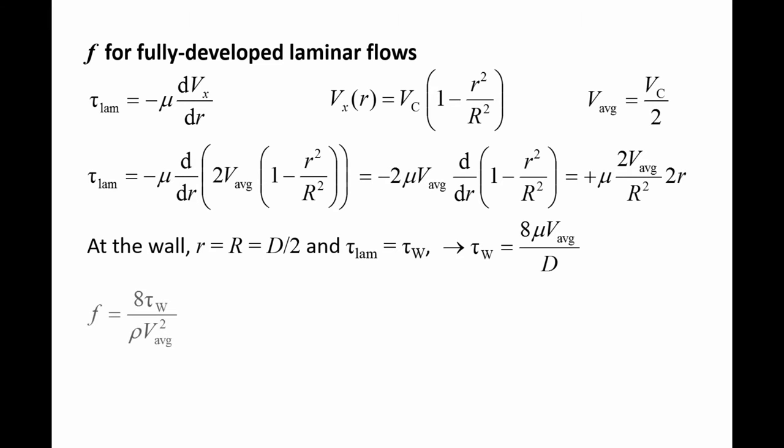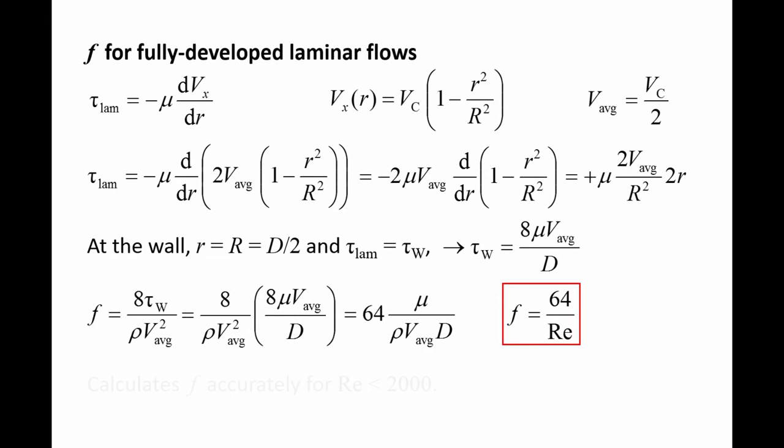Now recall the equation for the friction factor and plug in our new expression for tau W. After canceling terms, we are left with 64 times mu over rho v average d. Mu over rho v average d is equal to 1 over the Reynolds number. So the friction factor for fully developed laminar flows is 64 over the Reynolds number. Experiments show that this equation works well for flows with a Reynolds number below around 2,000.